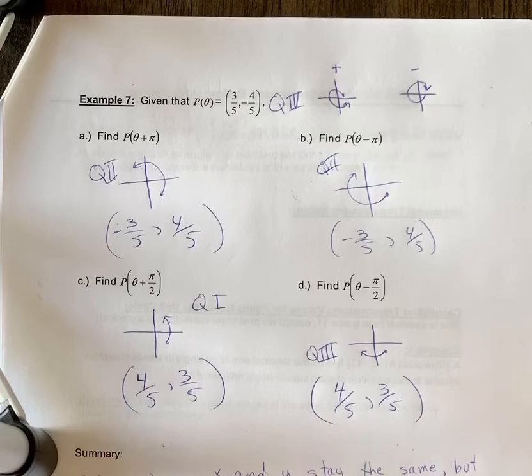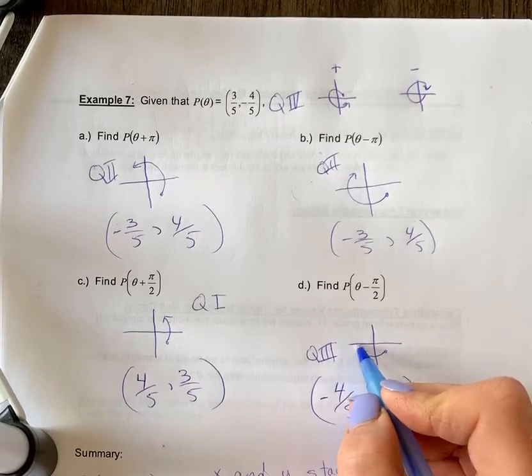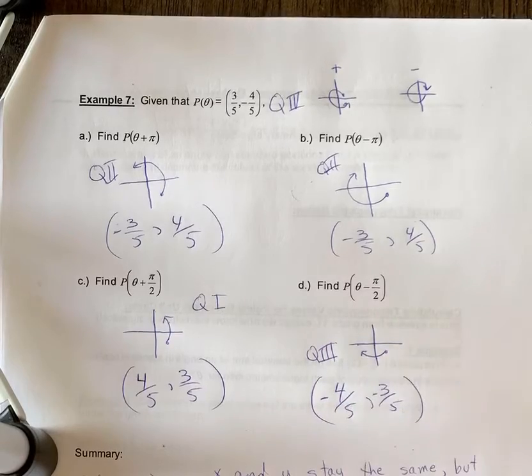So we're going to write this as 4 fifths and 3 fifths. But in quadrant 3, tan is the only positive one. So cos and sine are both negative, or you can think it's negative cos on the x-axis and negative y in quadrant 3.